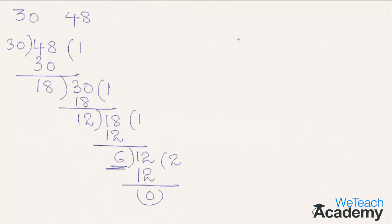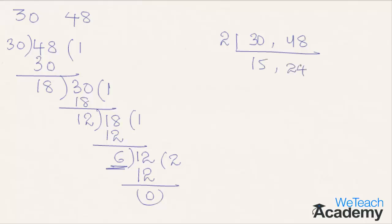Now let us find the least common multiple of 30 and 48. We divide both numbers by 2: 2 × 15 = 30 and 2 × 24 = 48. Then dividing by 3: 3 × 5 = 15 and 3 × 8 = 24.